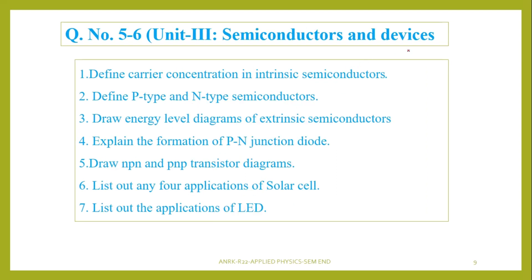Then we have semiconductors and devices as the third unit. The question number will be 5 to 6. What is carrier concentration in semiconductors? Then define p-type and n-type semiconductors and energy level diagram. Fermi level, conduction band, valence band — everything we have to show in the extrinsic semiconductors, which are nothing but n-type and p-type. Then formation of the p-n junction diode. List out applications of solar cell, LED, and photodiode. Whatever semiconducting devices come up, we have to understand their principle as well as applications.